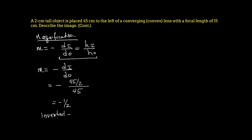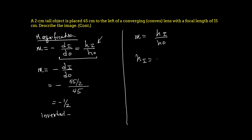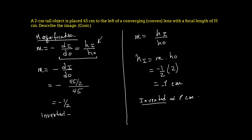To find the actual image height, we use m = hi / ho, so hi = m × ho = (−1/2) × 2 = −1 centimeter. Again, the negative sign means the image is inverted, and the image is 1 centimeter tall — not as tall as the original 2-centimeter object.